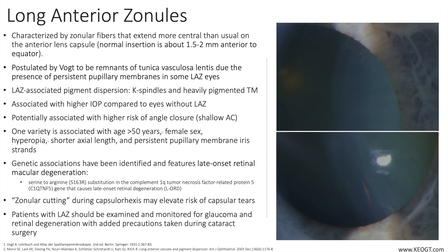Long anterior zonules are characterized by zonular fibers that extend more centrally than usual on the anterior lens capsule. The insertion is typically greater than 2 millimeters onto the surface of the anterior capsule relative to the equator of the lens.